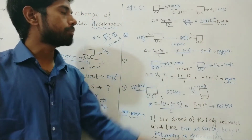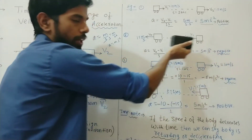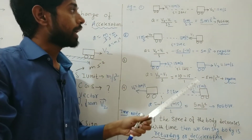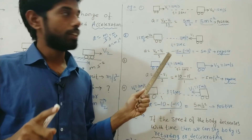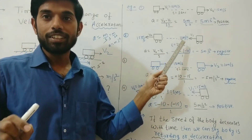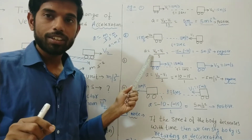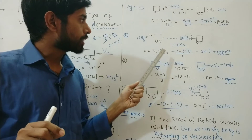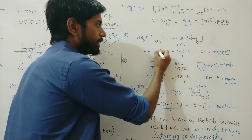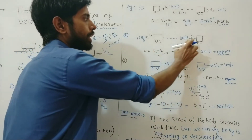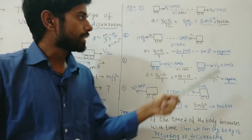Suppose a car is moving toward the left. The initial velocity is 10 m/s and the final velocity is 15 m/s. To find acceleration: v2 − v1 divided by t. Since the direction is toward the left, by sign convention we take both velocities as negative. Solving: (−15) − (−10) = −5, divided by 1 second, gives acceleration of −5 m/s². Here the acceleration is negative.